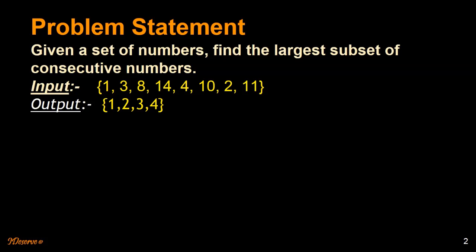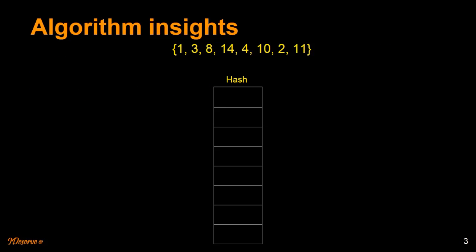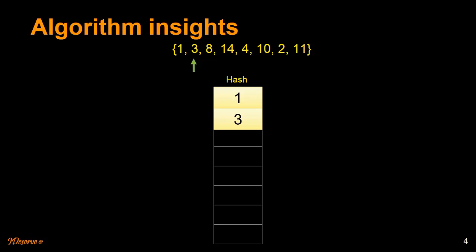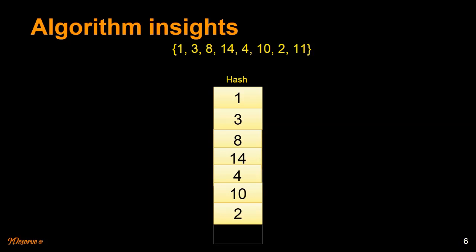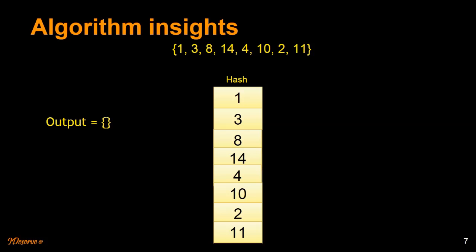Let's go to the algorithm insights. If we have this input set, we are going to use a hash table to solve this problem. First, we are going to insert all the elements in this set into the hash table one by one. Then we start traversing the array again one by one and try to construct the consecutive subset in the output set.